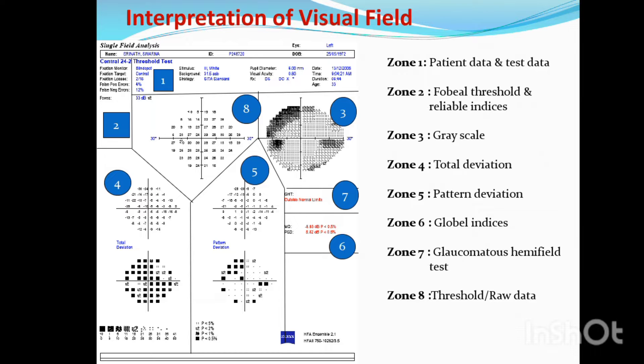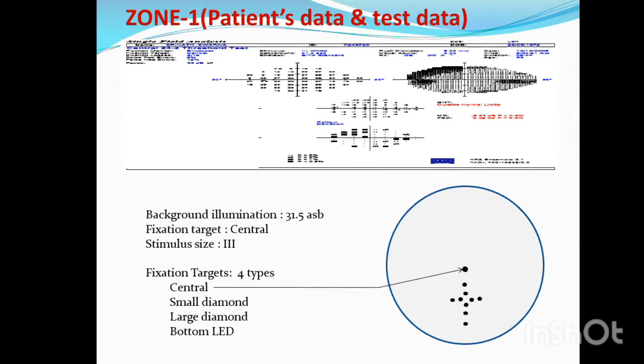Basically, the HBF report has a total of 8 zones. Zone 1 is patient test data. Zone 2 is foveal threshold among reliable indices. Zone 3 is gray scale, zone 4 is total deviation, zone 5 is pattern deviation, zone 6 is global indices, zone 7 is glaucoma hemifield test, and zone 8 is threshold bar raw data.